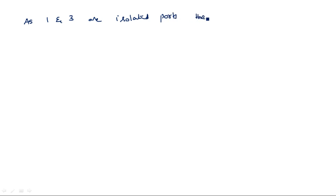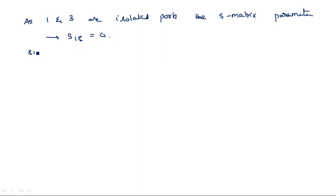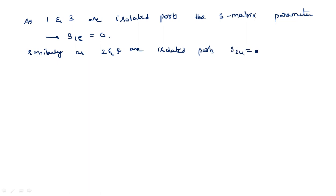The scattering matrix parameter: since ports 1 and 3 are isolated ports, S₁₃ is equal to 0. Similarly, since ports 2 and 4 are isolated ports, S₂₄ is equal to 0.